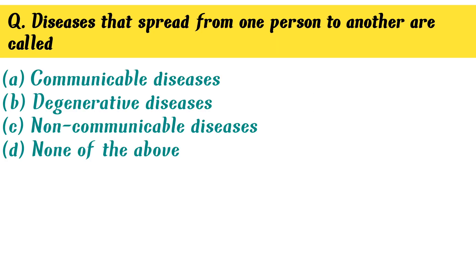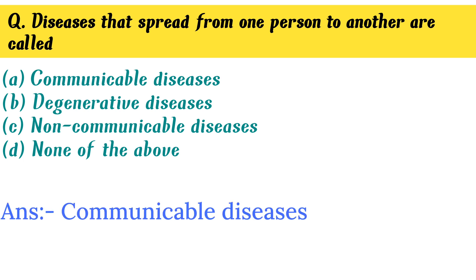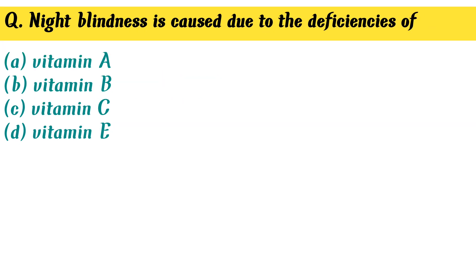Diseases that spread from one person to another are called — Option A. Communicable diseases is the correct answer.